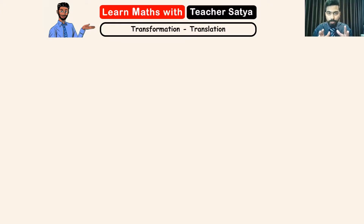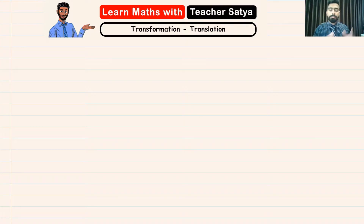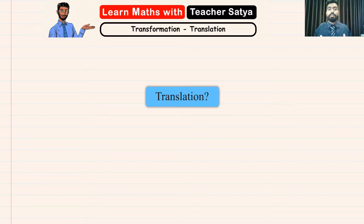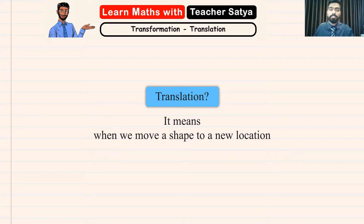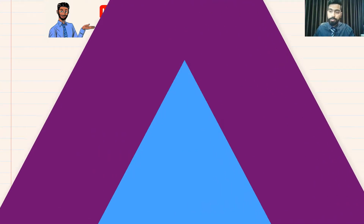So before we go forward, let's understand what we mean by translation. Translation doesn't mean the definition of a certain thing. Translation in maths means when we move a shape to a new location. Now let's take this understanding and solve a few questions.